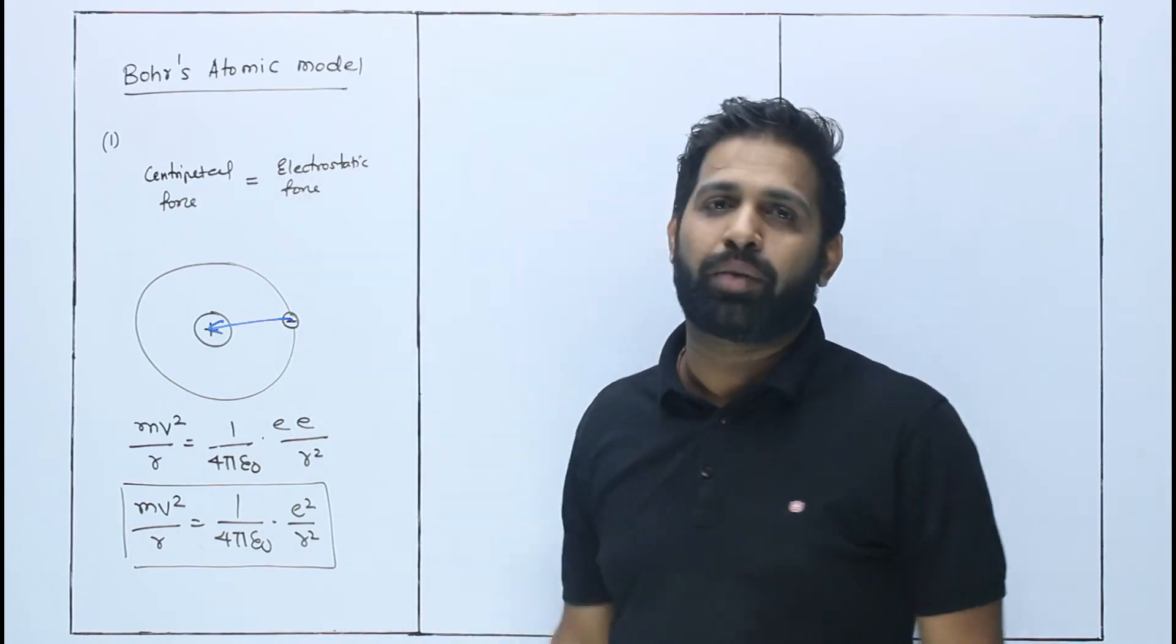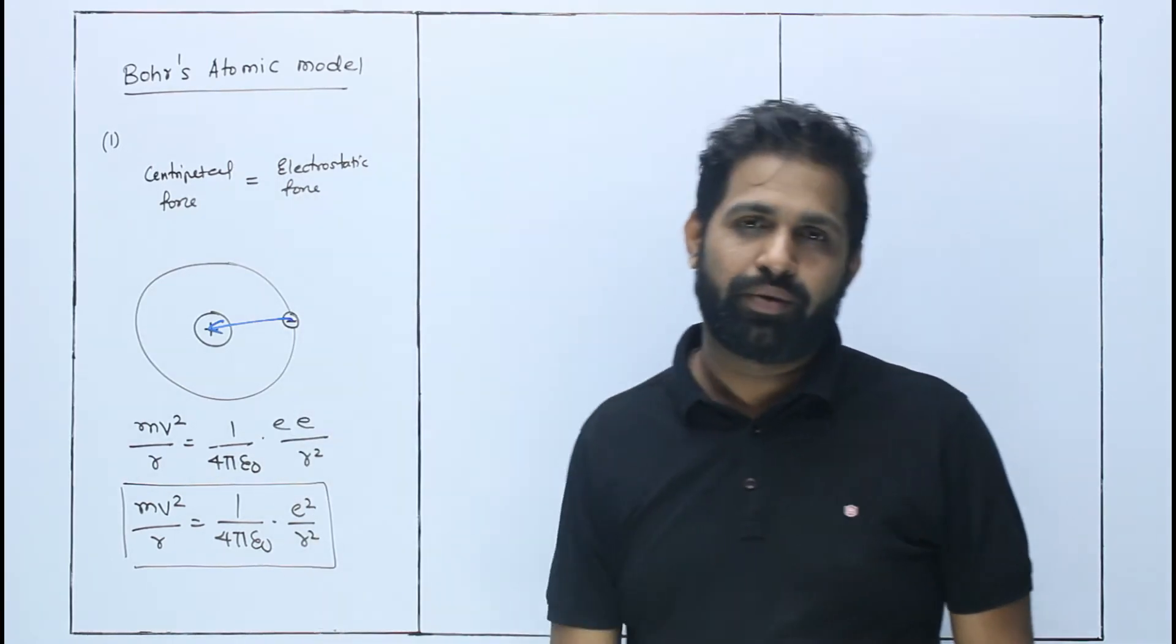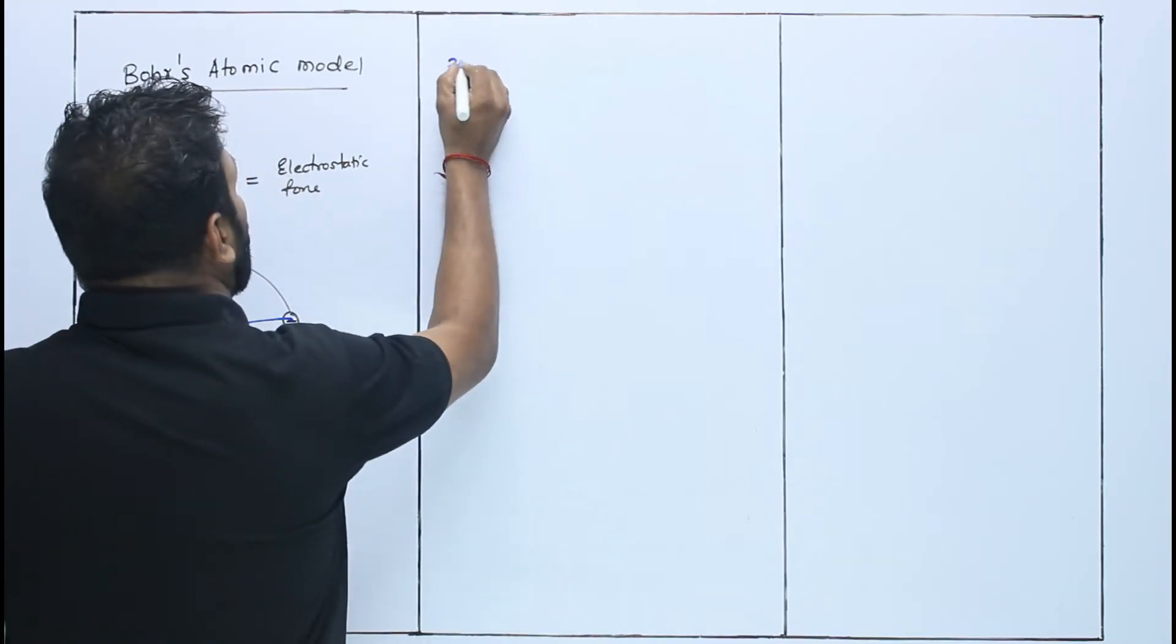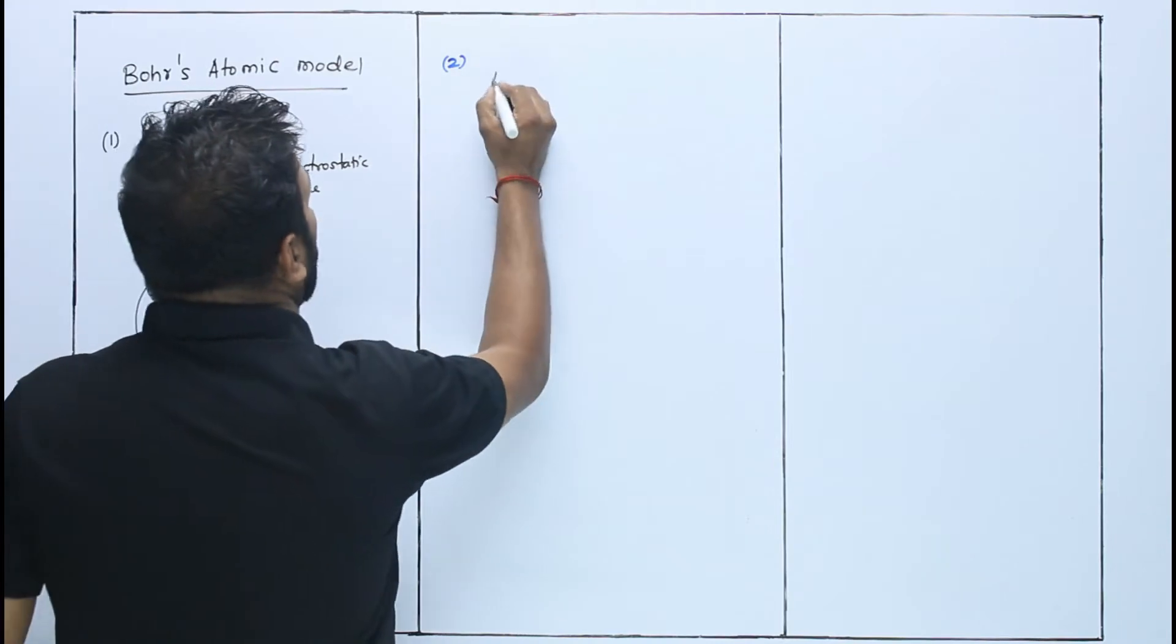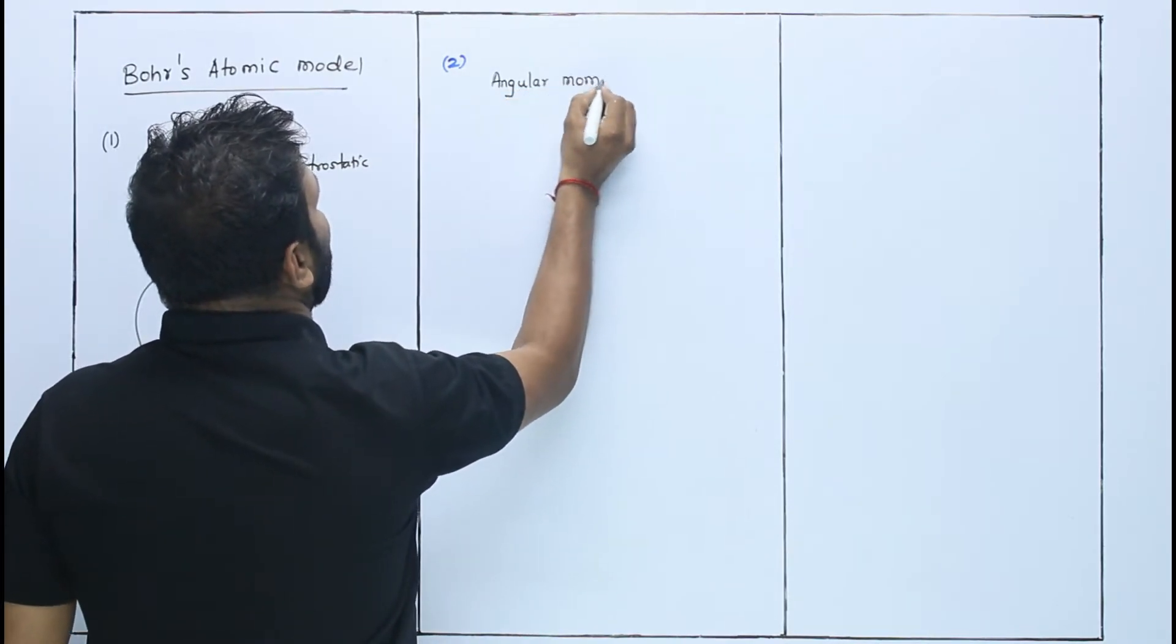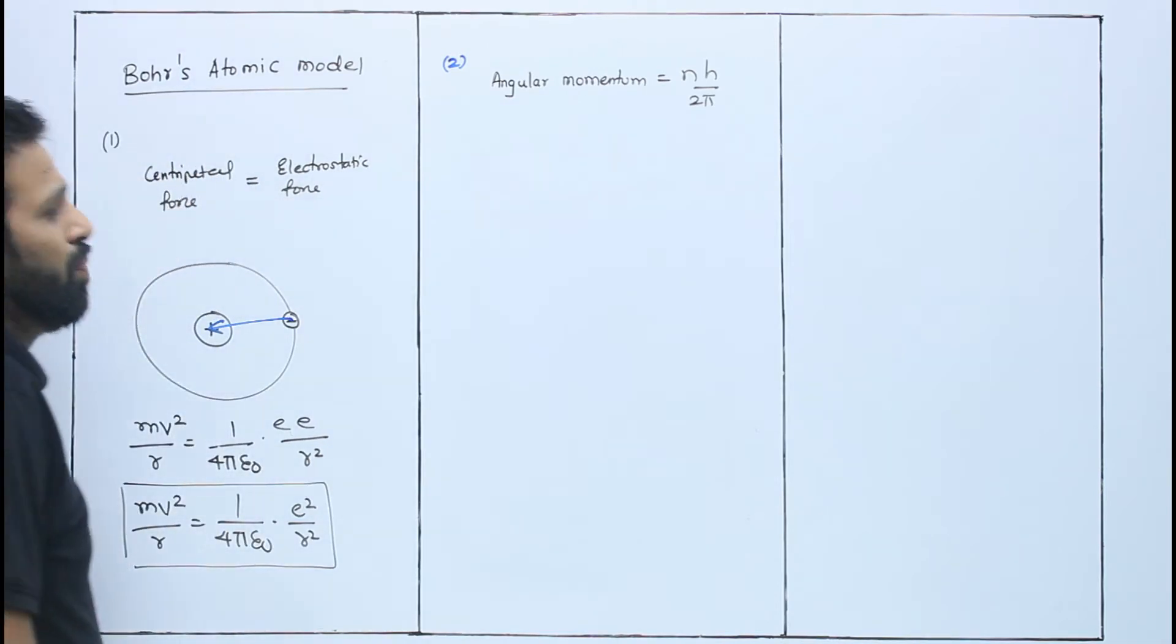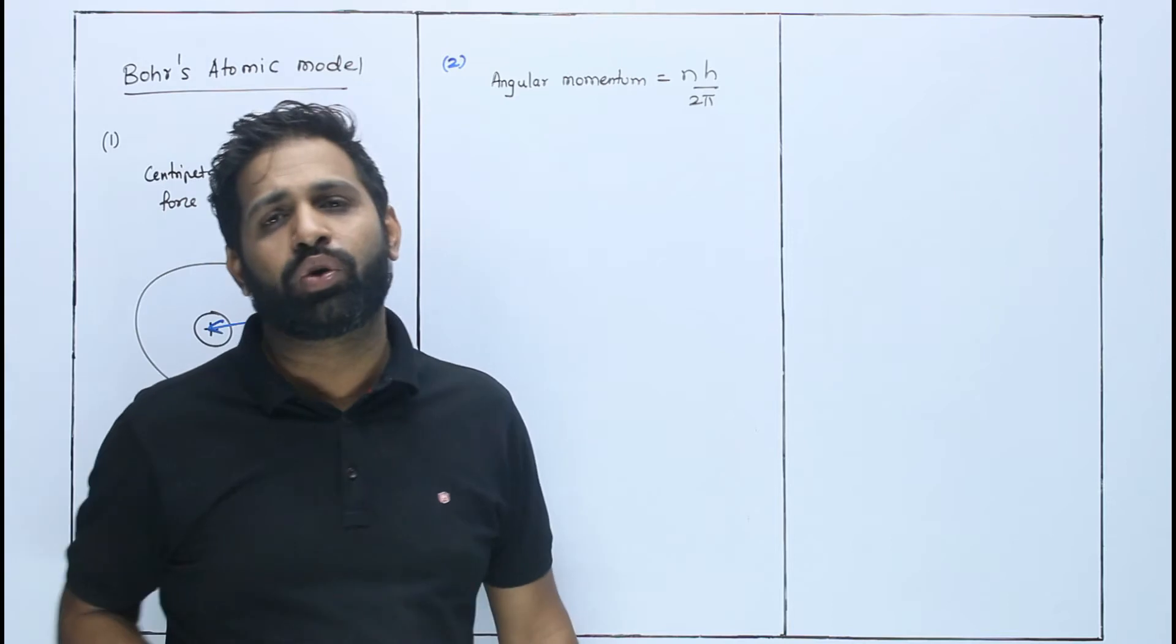Next one: electron will not revolve in any orbit. Electron revolves only in those orbits whose angular momentum is integral multiple of h / 2π. We have seen this before - when atom moves, there is angular momentum.